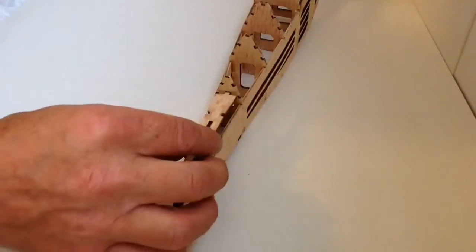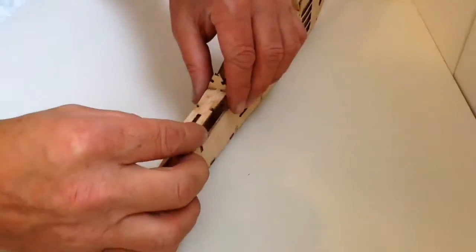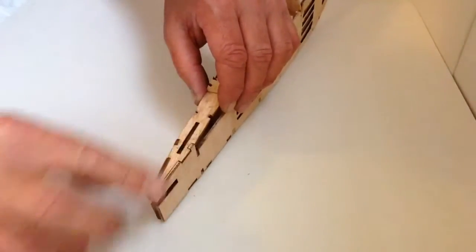Take your section of the fuselage and just notice how that clicks into position and the areas that you're going to need to apply the glue.